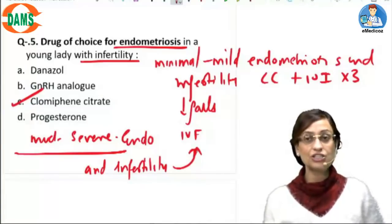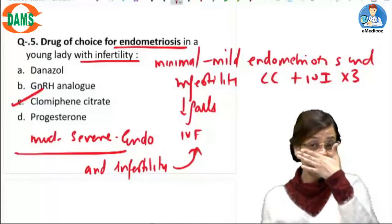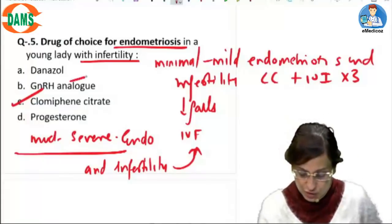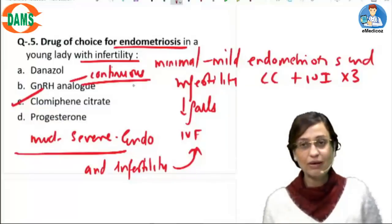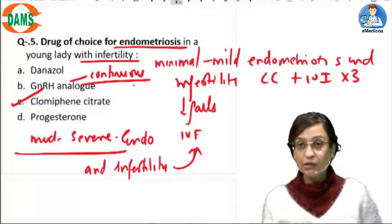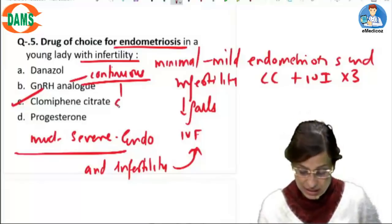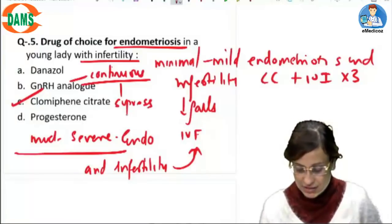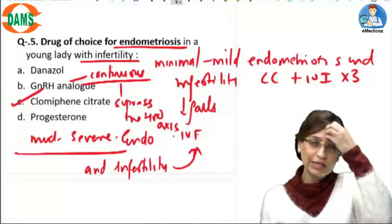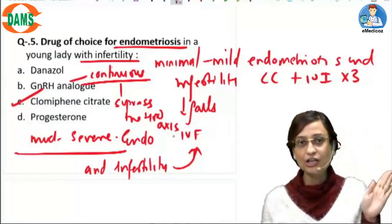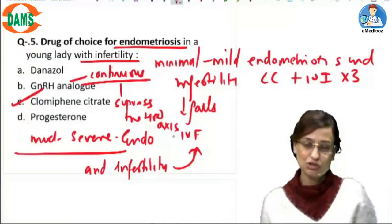Please do not mark GnRH analogues for infertility and endometriosis because you are giving it in a continuous manner. So when you give it in a continuous manner, she cannot become pregnant because it is going to suppress the HPO axis. Whereas we need to stimulate the axis. So don't answer GnRH for infertility in endometriosis. GnRH is given for pain management in endometriosis.